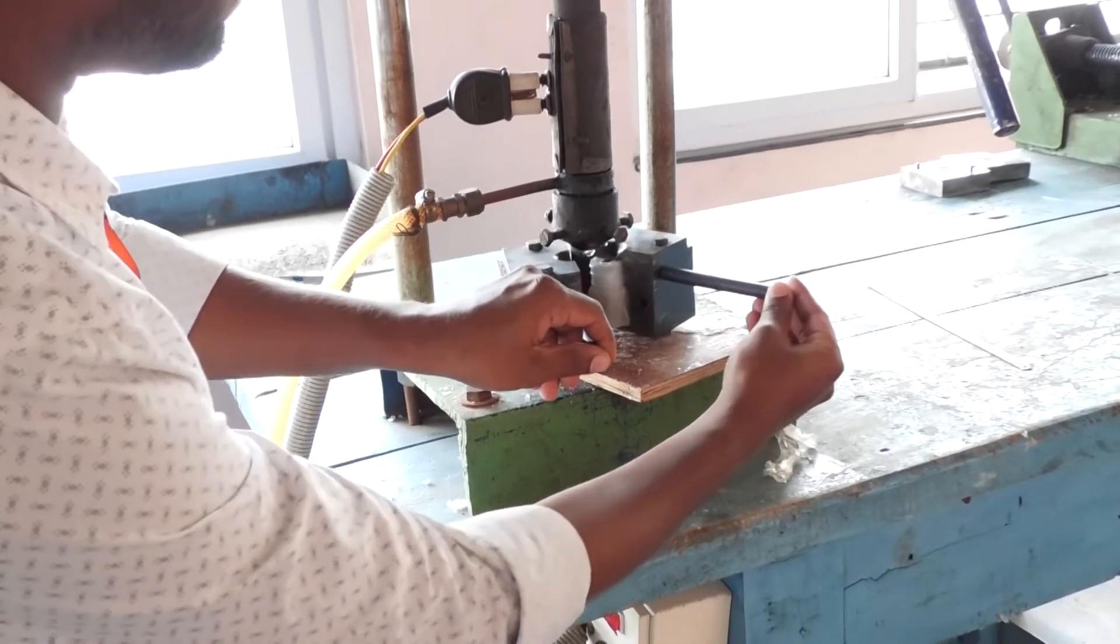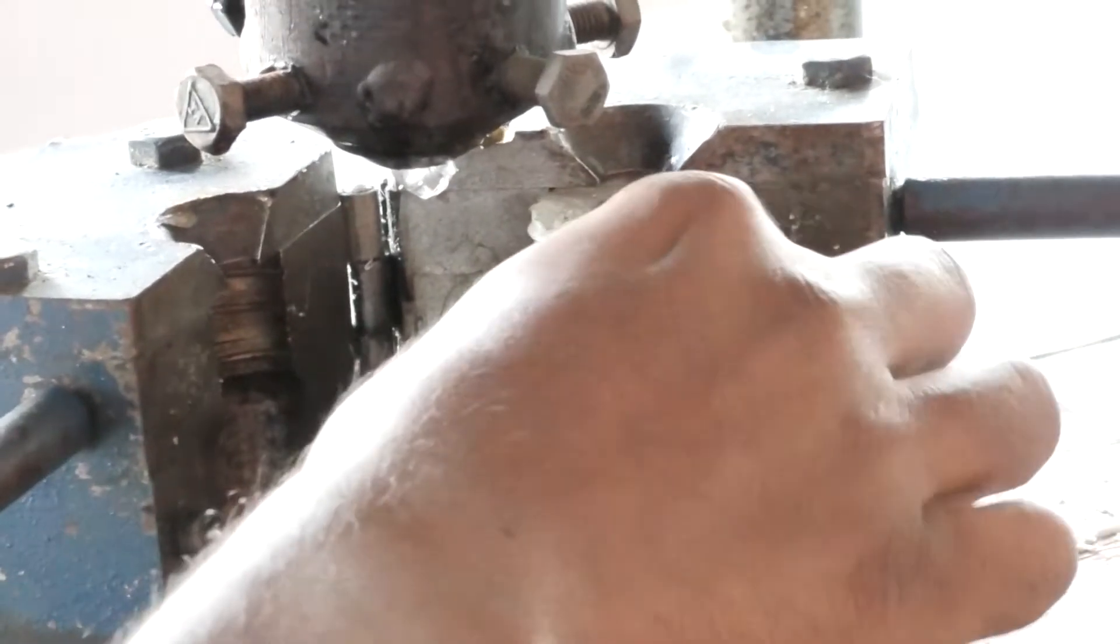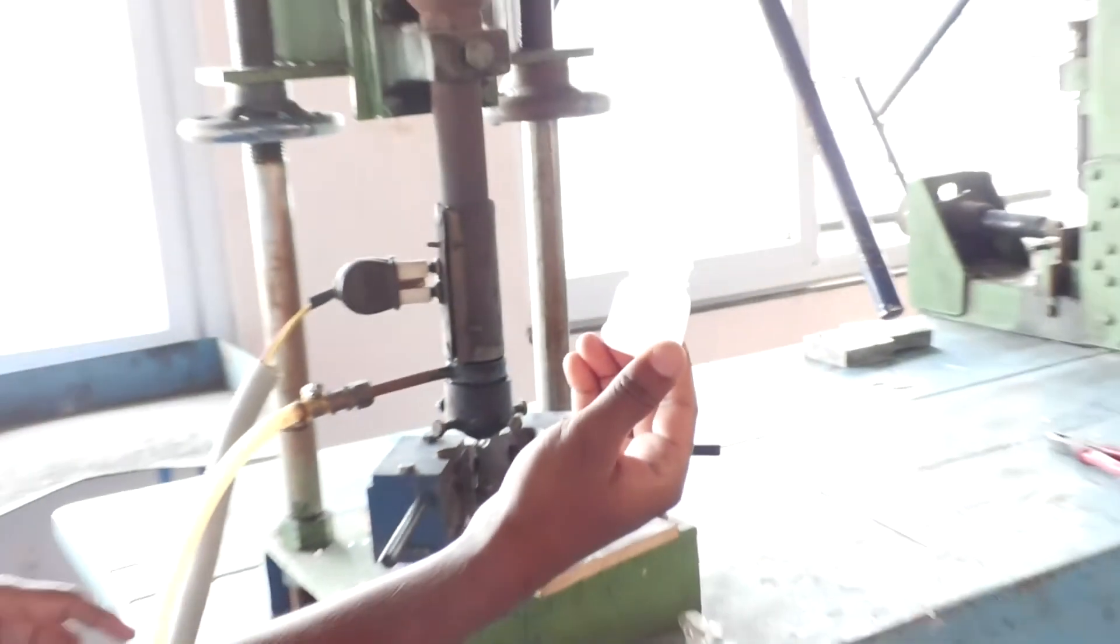Now you can see once you open the die, you can clearly see this is the product which you are getting in the hollow shape.